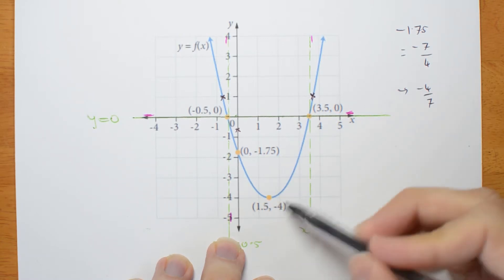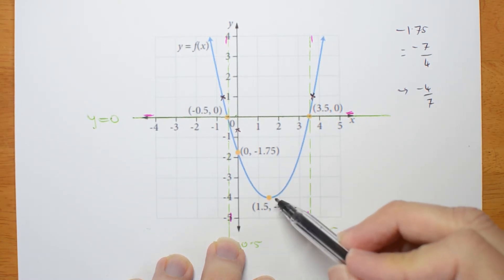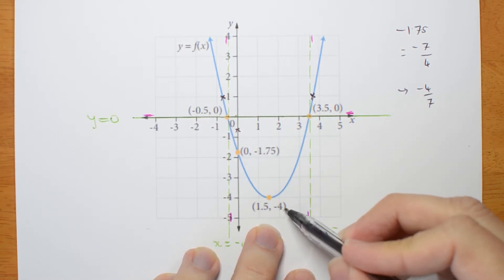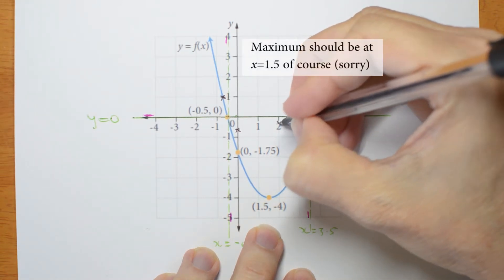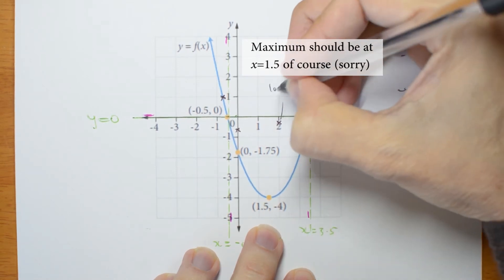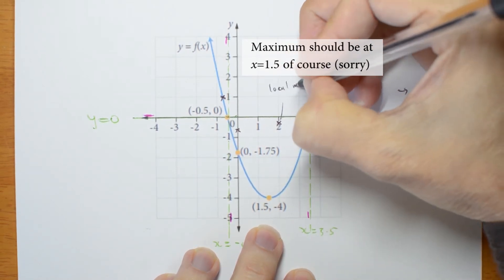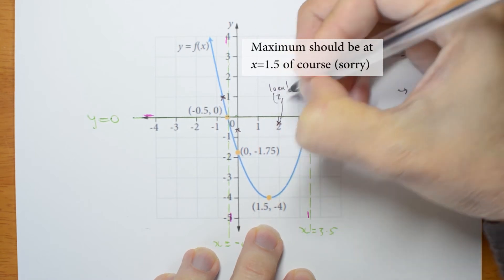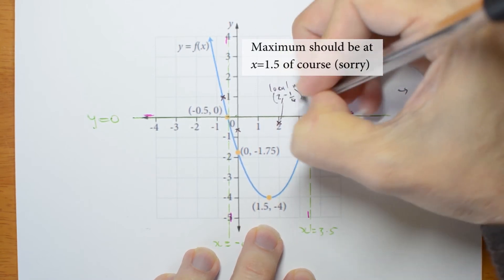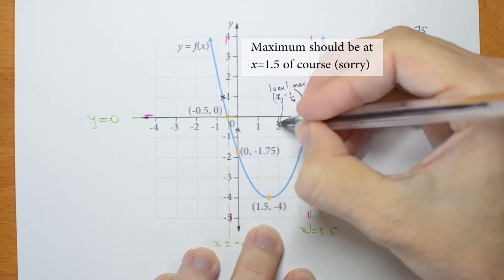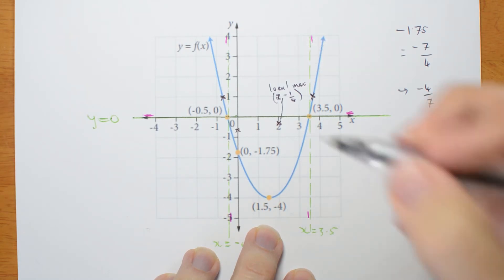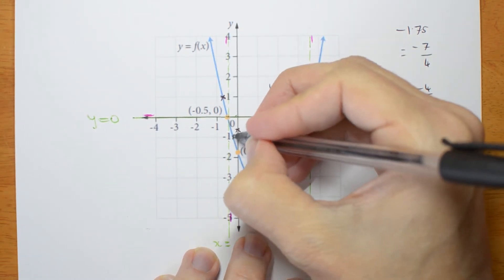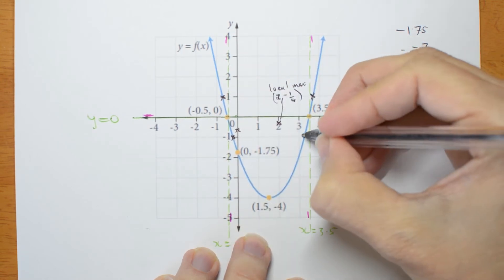Now, what about this local minimum? In the reciprocal graph, that's going to be a local maximum. The y coordinate is negative 4, so the reciprocal is going to be negative a quarter, which is going to be here. There is going to be a local maximum at 2 negative a quarter. That's the coordinate of this point here. Oh, and the graph is going to go over the original when it's equal to negative 1 on both sides.